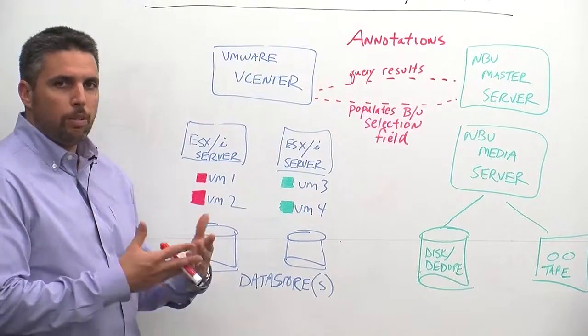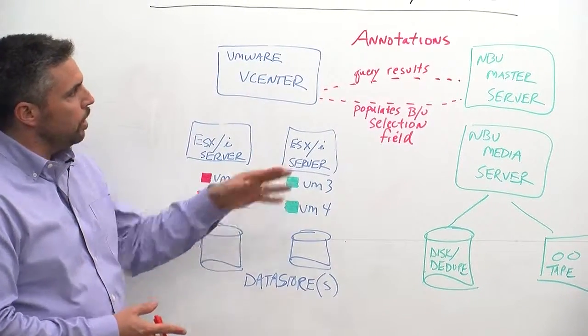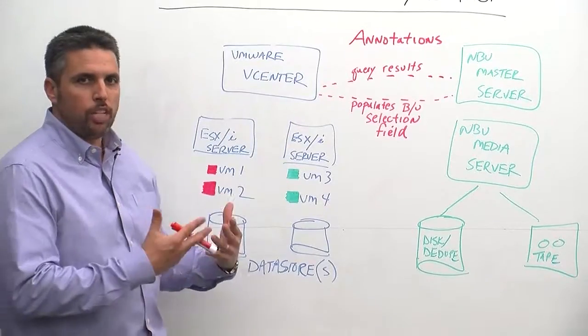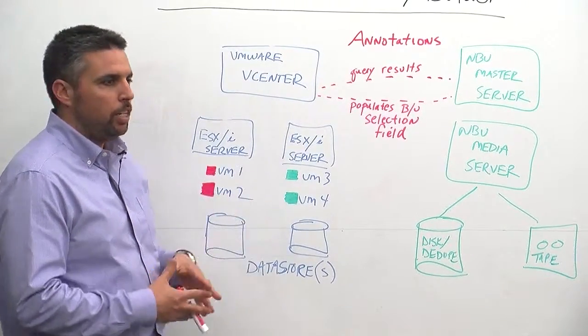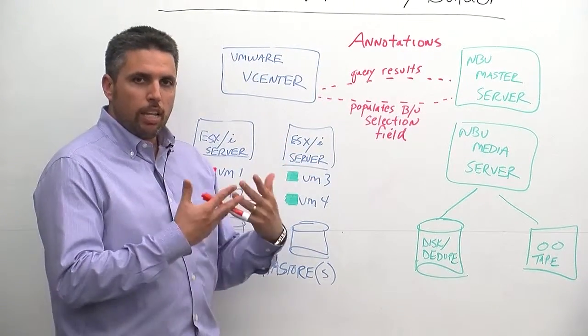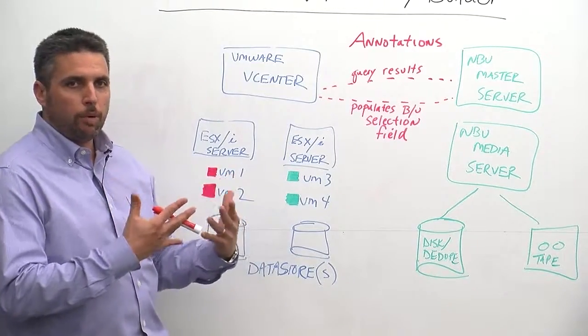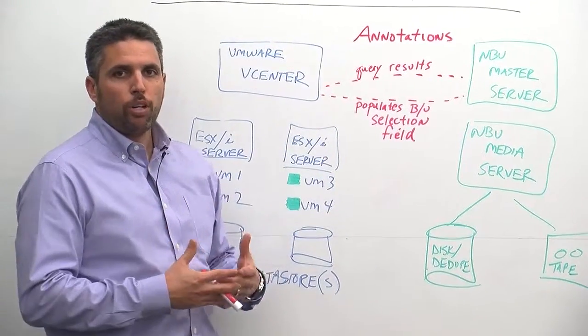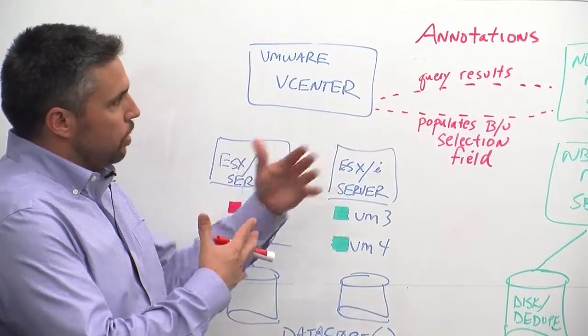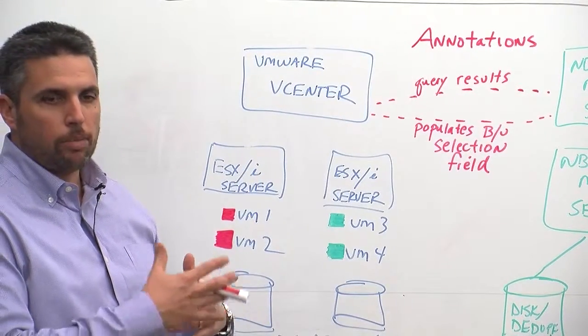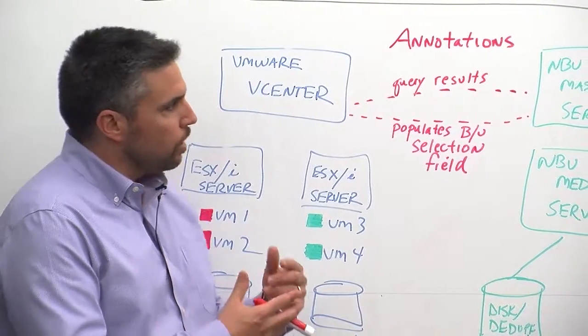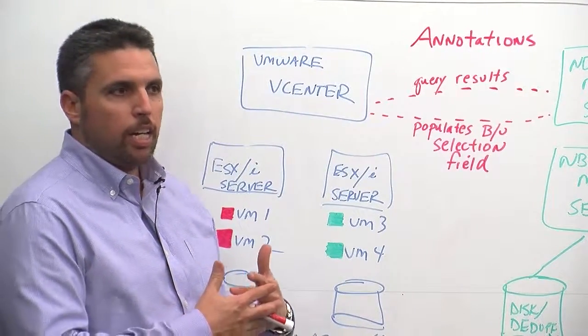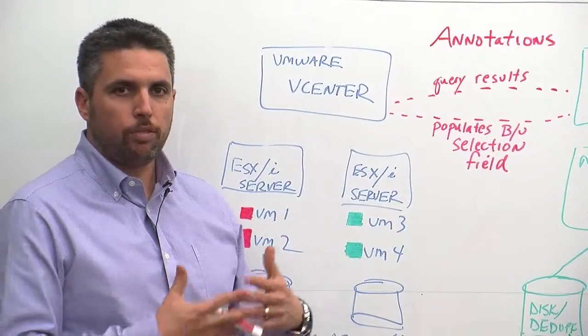So the way VIP, VMware Intelligent Policy's Query Builder, is there's a number of different annotations that are pre-populated. So as you choose and define a policy of type VMware, then in the Clients tab, there's an option for Query Builder. So there's a number of different annotations. I think there's about 36 to be exact. So it's very easy to implement to protect these VMware assets, virtual machines.